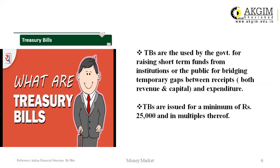The next instrument is treasury bills. Treasury bills are used by the government for raising short-term funds from institutions or the public, for bridging the temporary gap between receipts — both revenue and capital — and expenditure. These are money market instruments issued by the Reserve Bank of India on behalf of the central government. These bills are issued when there is a shortage of funds or when the RBI wants to control cash liquidity in the market. Their maturity, also known as zero coupon bonds, is always one year or less than one year. They are highly liquid instruments and carry very low risk.